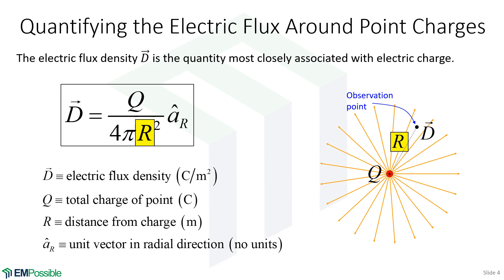The next variable is R — the distance from the charge to the observation point. No matter where that observation point is, the distance from the charge to the observation point is R. Notice in this equation we have R squared, but R itself is the distance to the observation point. We also have this unit vector A sub R, and the hat over top of A lets us know it is a unit vector. If we draw a line from the charge to our observation point, the unit vector is in that direction — from the charge to the observation point. So we draw the unit vector over to the side, and we know the field will be in that direction.